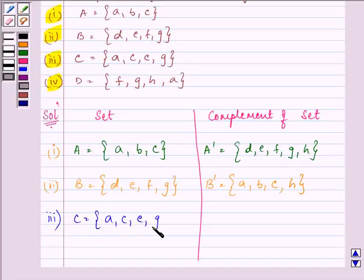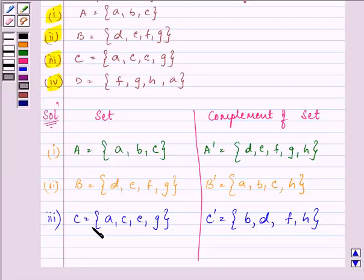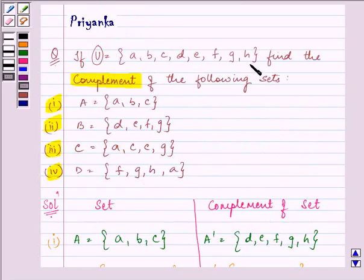For C, the elements are A, C, E, G. So, C complement will be B, D, F, and H, because these are the elements which are not present in set C but are a part of the universal set.